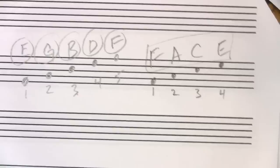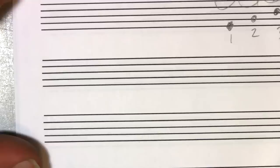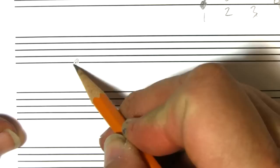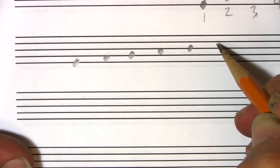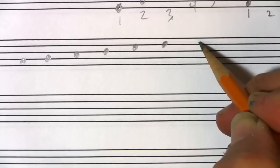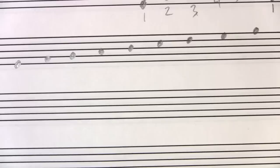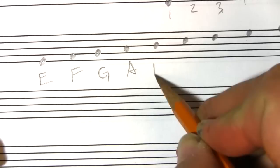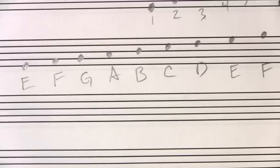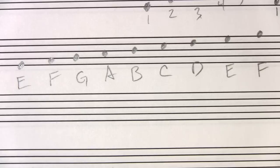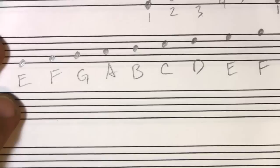So we've got the lines — E, G, B, D, F — and the spaces — F, A, C, E. Together, what we've got going from bottom to top is E, F, G, A, B, C, D, E, F. That's the lines and the spaces together.